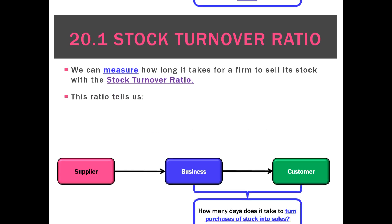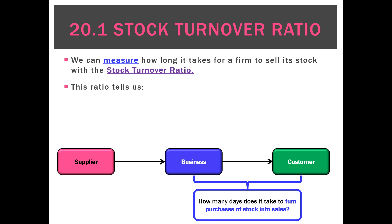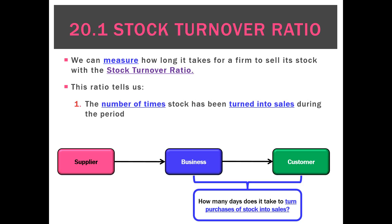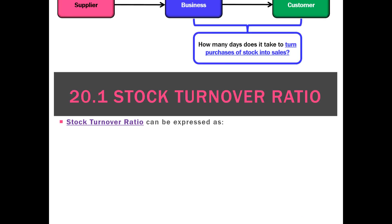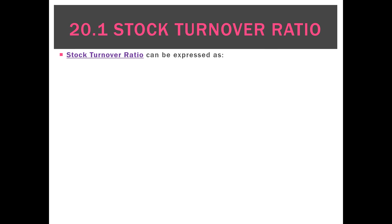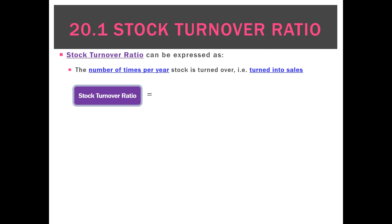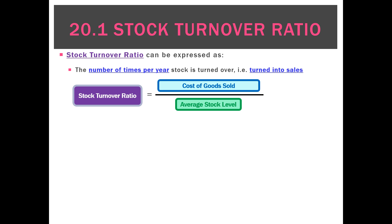To do that we use a ratio called the stock turnover ratio, and you can actually calculate it a couple of ways: one is the number of times stock has been turned into sales during the period, and two, the average number of days it takes to sell out all of our stock. The first ratio is in terms of the number of times per period stock is turned over into sales, calculated by taking the cost of goods sold for the period and dividing it by the average stock level.